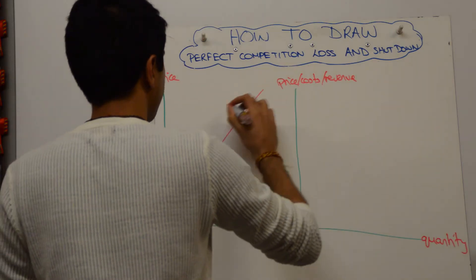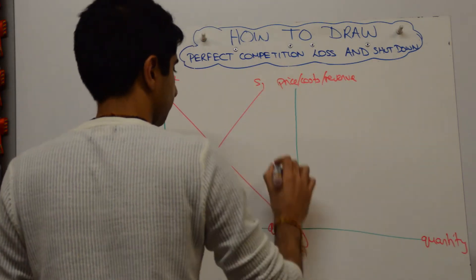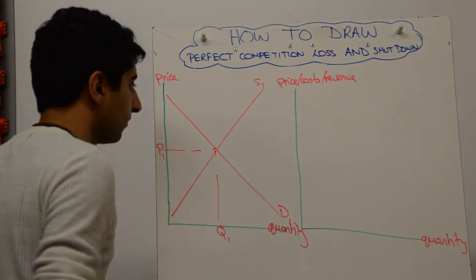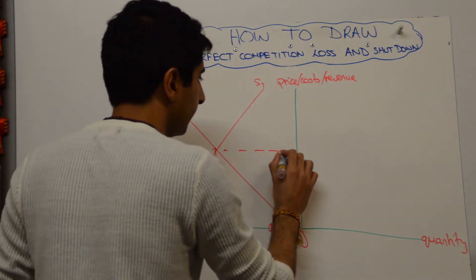Alright, simple demand and supply here. Equilibrium price and quantity. Firms are price takers, so take that price across.